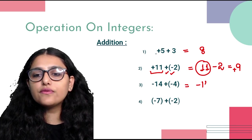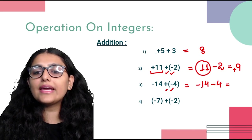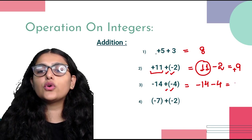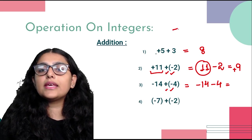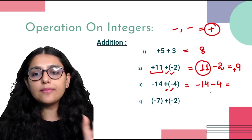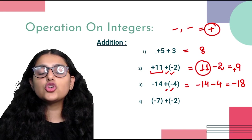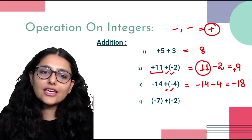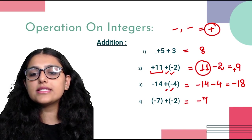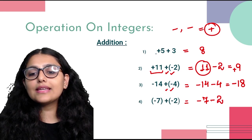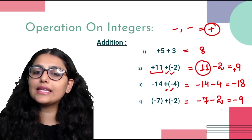Next, minus 7 plus negative 2: plus minus becomes minus, so minus 7 minus 2. Two negative signs → addition operation: answer is minus 9. So whenever two signs are the same (both plus or both minus), we add; when signs are different, we subtract. The sign of the result follows the larger number.